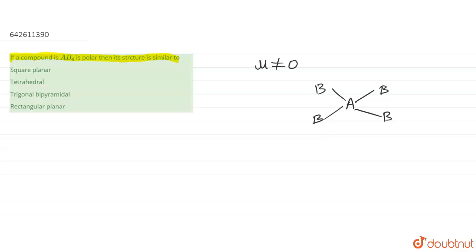Let's say the electronegativity of B is greater than A. If we talk about the dipole moment, the head of the dipole is always towards the more electronegative atom. So here B is more electronegative, meaning the head of each dipole points towards B and the tail towards the central atom A. All these dipoles are vector quantities, equal in magnitude but opposite in direction, so they all cancel each other. This compound has zero net dipole moment — it is non-polar.